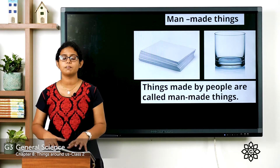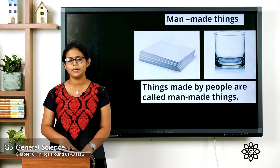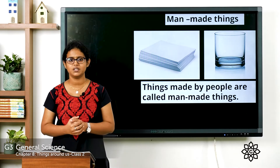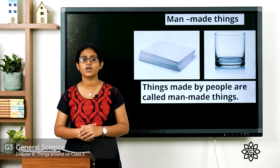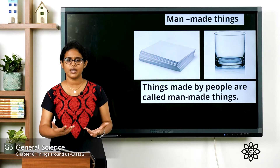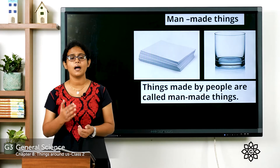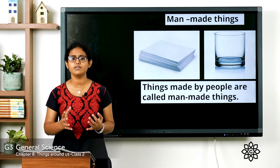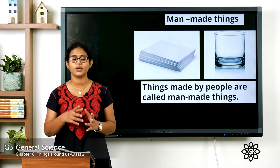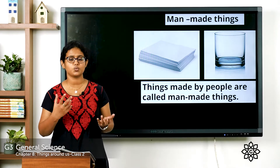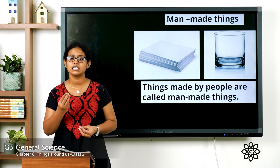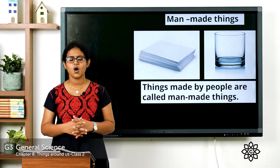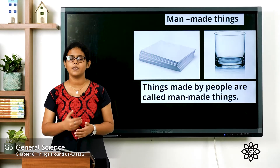Next, let's look at man-made things. Man-made things are not found in nature — they are made by people. Paper and glass are examples of man-made things. Paper is made from wood, which we get from plants. Glass is made from sand, which is obtained from the earth. So all man-made things are made from natural things.